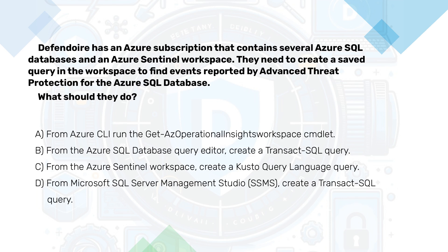We have an Azure subscription that contains several Azure SQL databases and an Azure Sentinel workspace. We need to create a saved query in the workspace to find events reported by advanced threat protection for the Azure SQL database. What should we do? A. From Azure CLI, run the get operational insights workspace command. B. From the Azure SQL database query editor, create a Transact-SQL query. C. From the Azure Sentinel workspace, create a Kusto query language query. D. From Microsoft SQL Server Management Studio, create a Transact-SQL query.